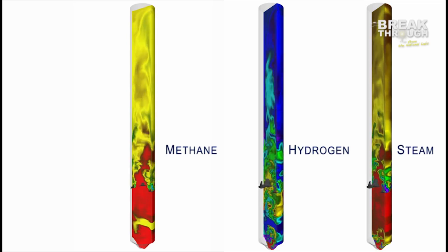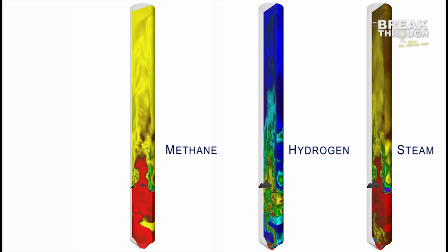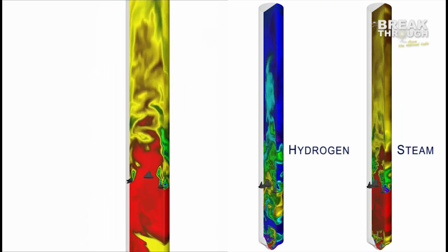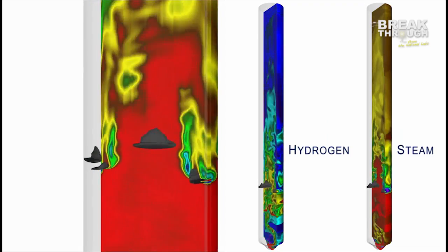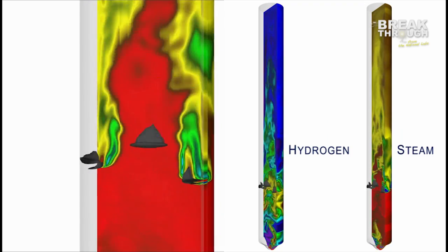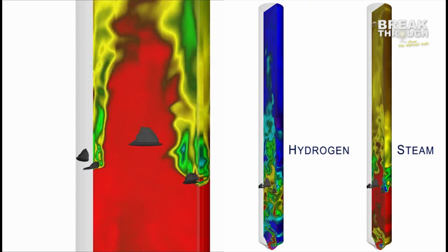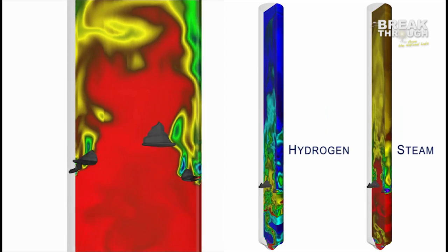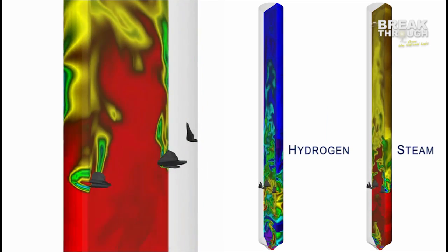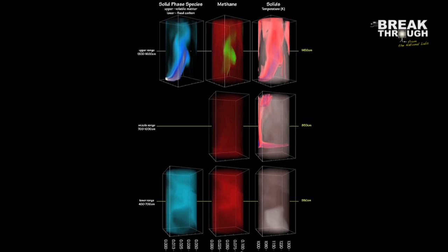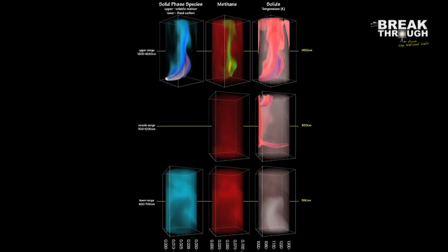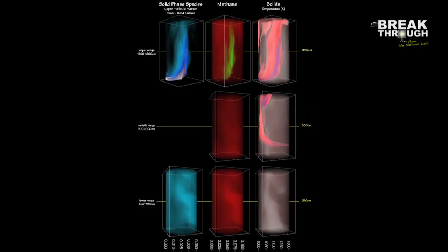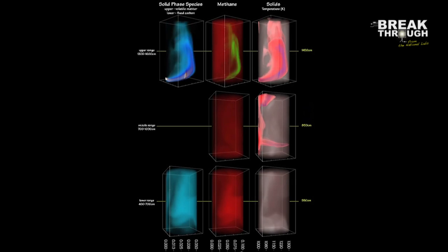To understand the value of MFIX, consider coal gasification, which is a power production technology. In a coal gasifier, coal is fed into the bottom of the reactor, along with air, oxygen, and steam. As the coal particles rise, they flow into and out of pockets of hot gases.